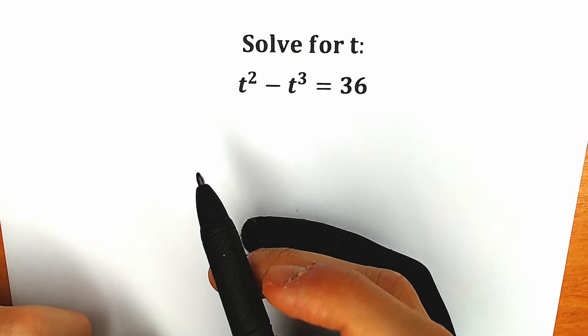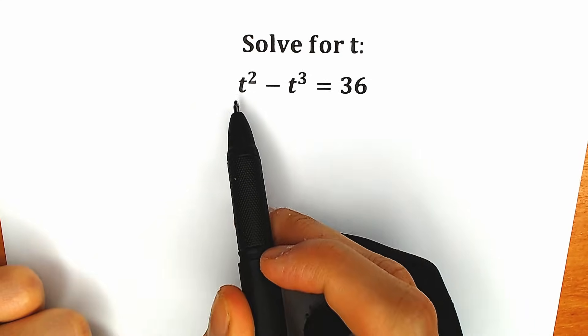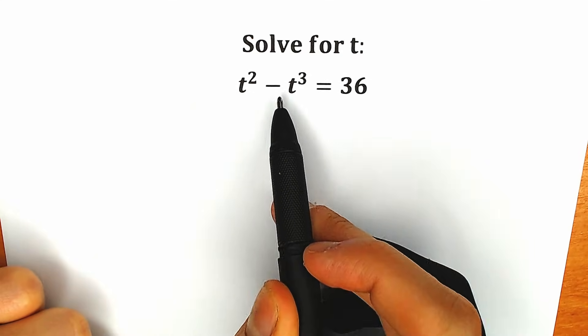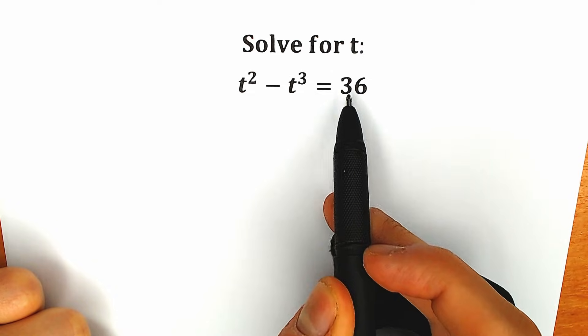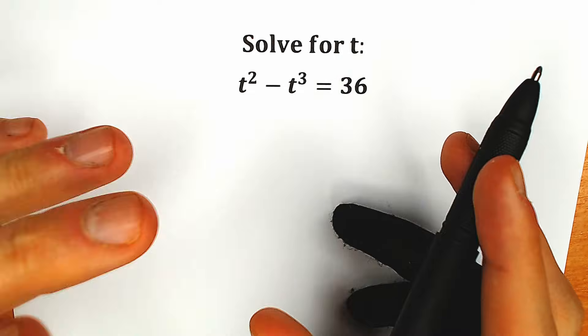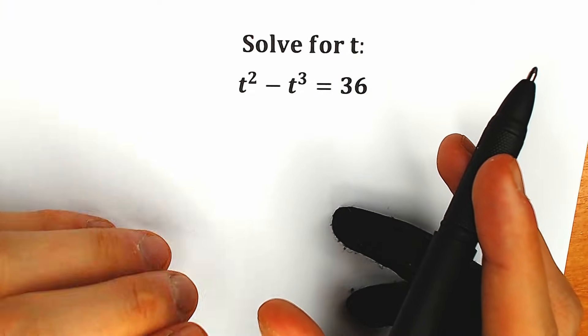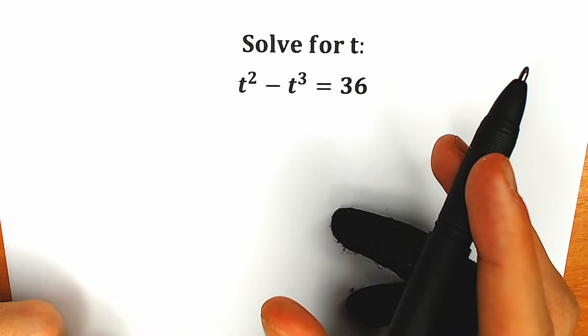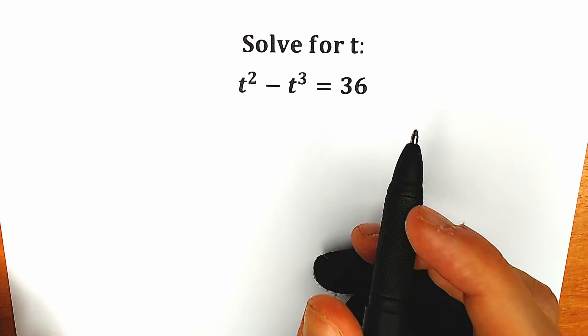Hello everyone, happy to see you here. Today we have a really interesting equation: t squared minus t cubed equals 36. We need to solve this equation for t. If you have your solution or assumption, you can write it in the comments below, and then we will check your answers — it will be really interesting.